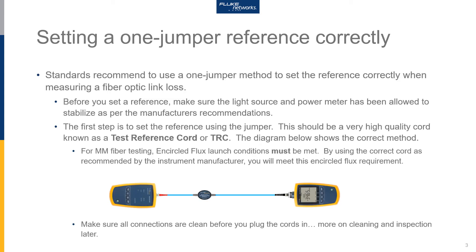If you look at the major premises fiber optic test standards available, the preferred and recommended reference method is the OneJumper method. There are other methods, such as the ThreeJumper method, that do have a place when measuring MPO-MPT trunks. However, the TwoJumper method should never be used for testing premises cabling — you will end up with the wrong results.